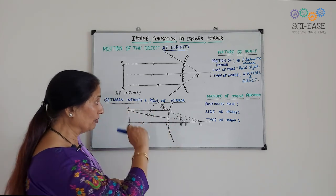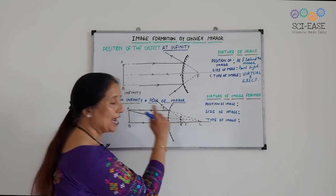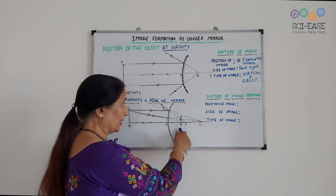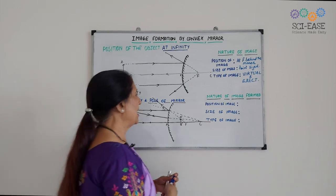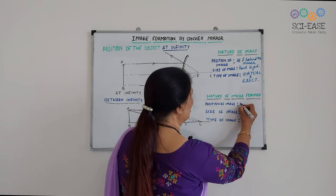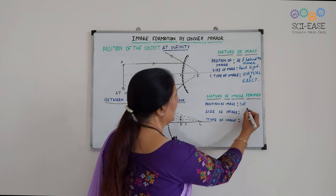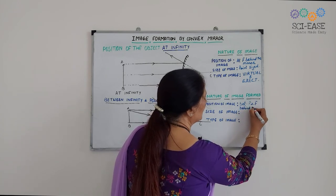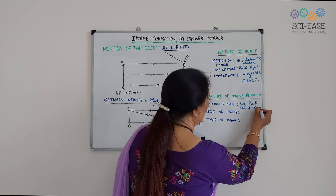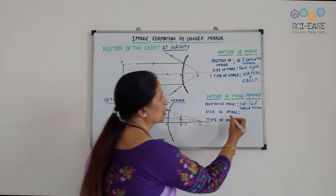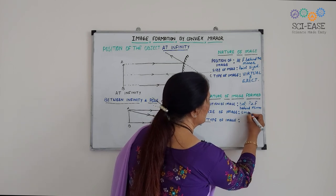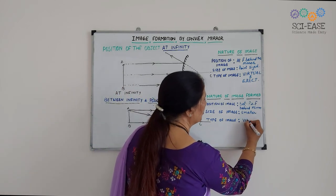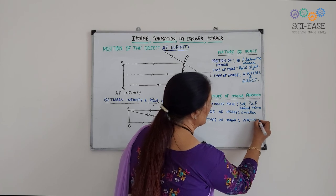So the position of the image — what will be the position? It is between the pole and the focus of the mirror, behind the mirror. What type of image is formed? It is virtual and erect. Size of the image: smaller, or diminished. Type of the image: it is always virtual and erect.